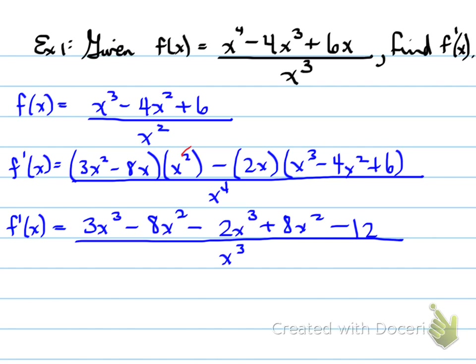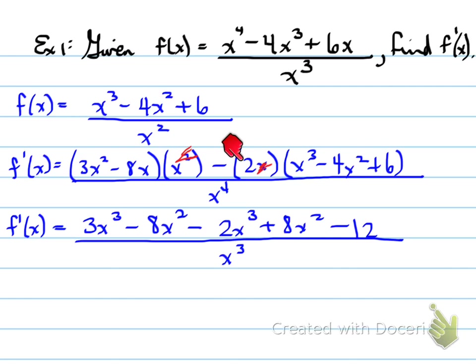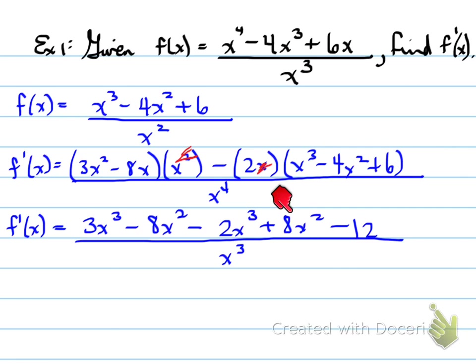One x was taken out so that the denominator simplified, and when I expand the numerator: 3x squared times x is 3x cubed, minus 8x times x is minus 8x squared, then minus 2 times x cubed is minus 2x cubed, minus 2 times minus 4x squared is plus 8x squared, and minus 2 times plus 6 is minus 12.